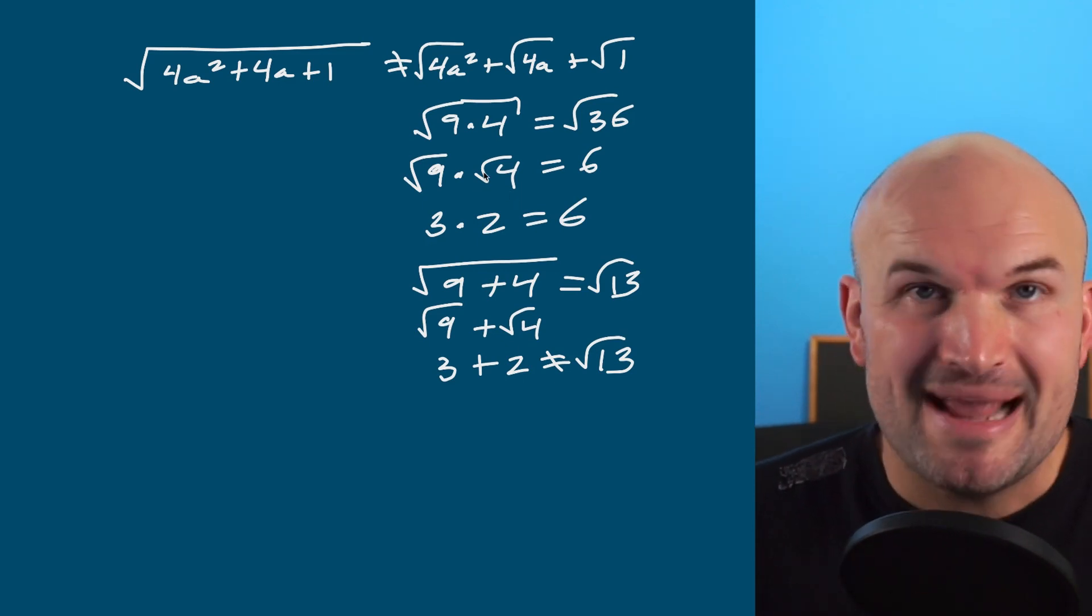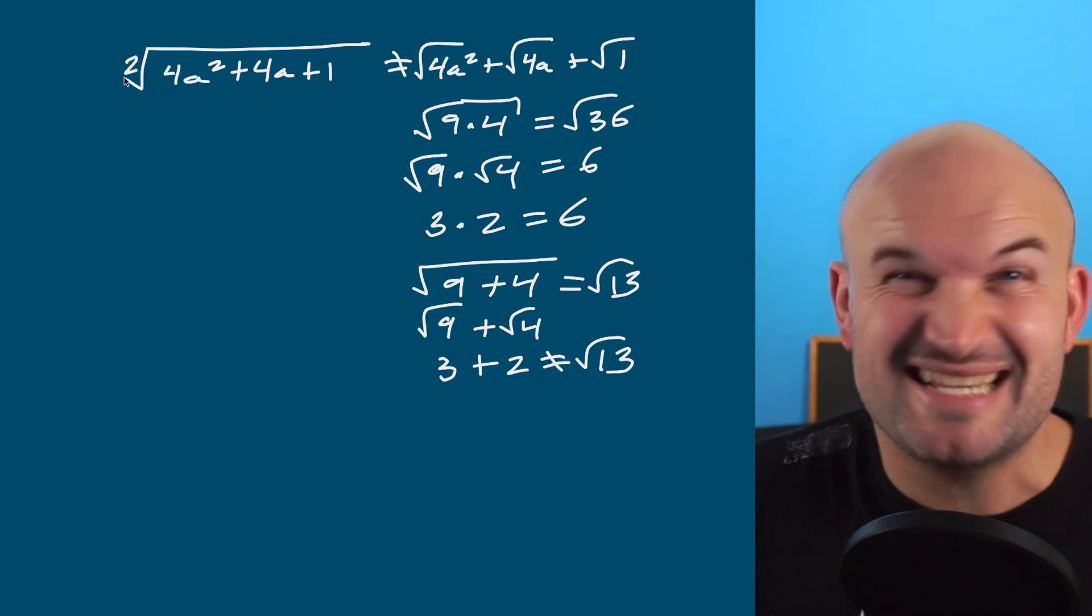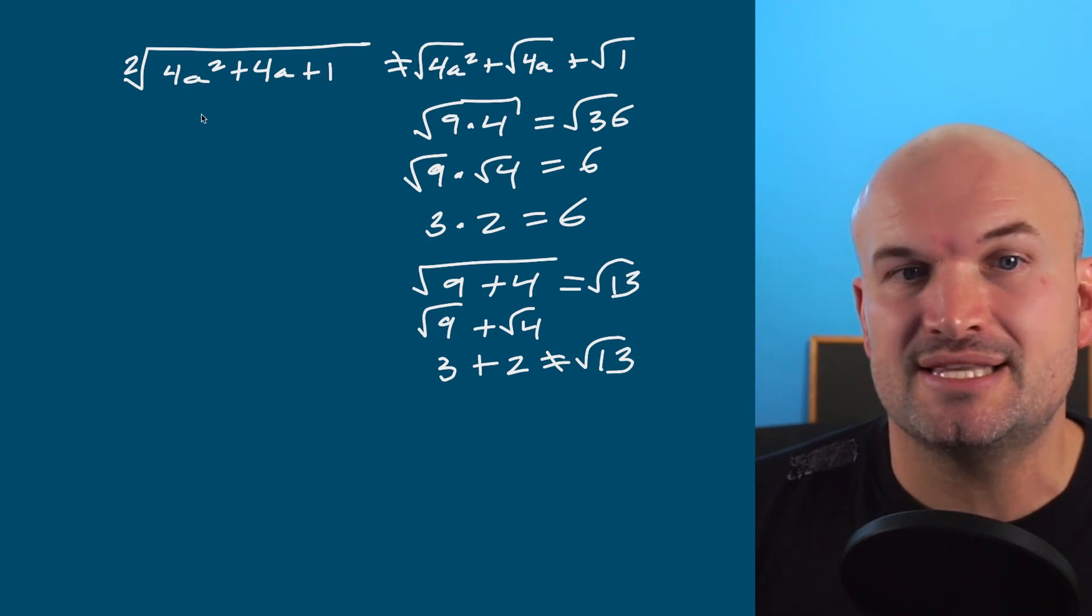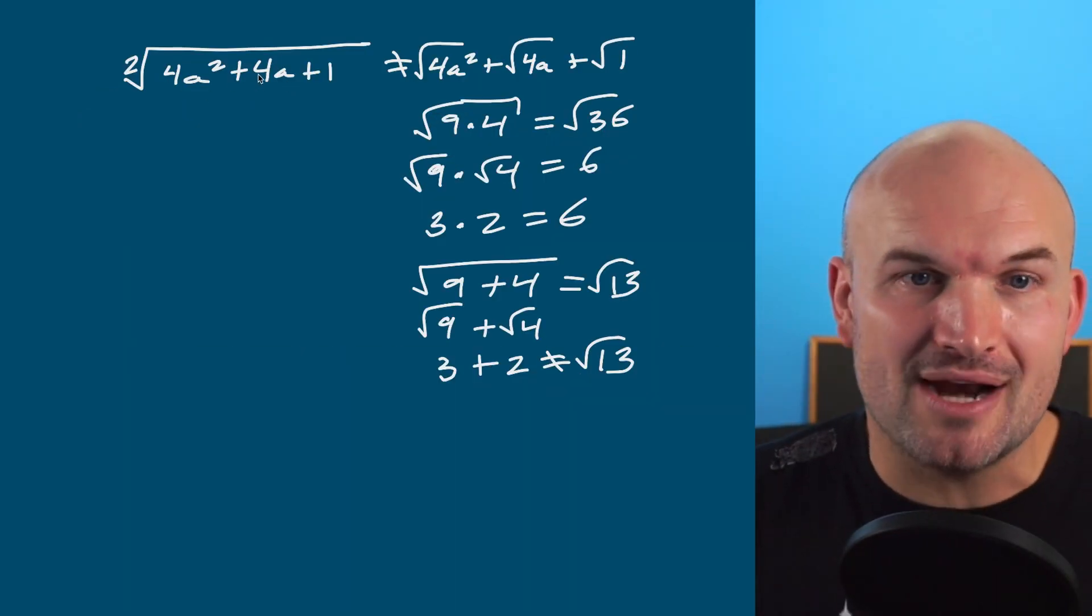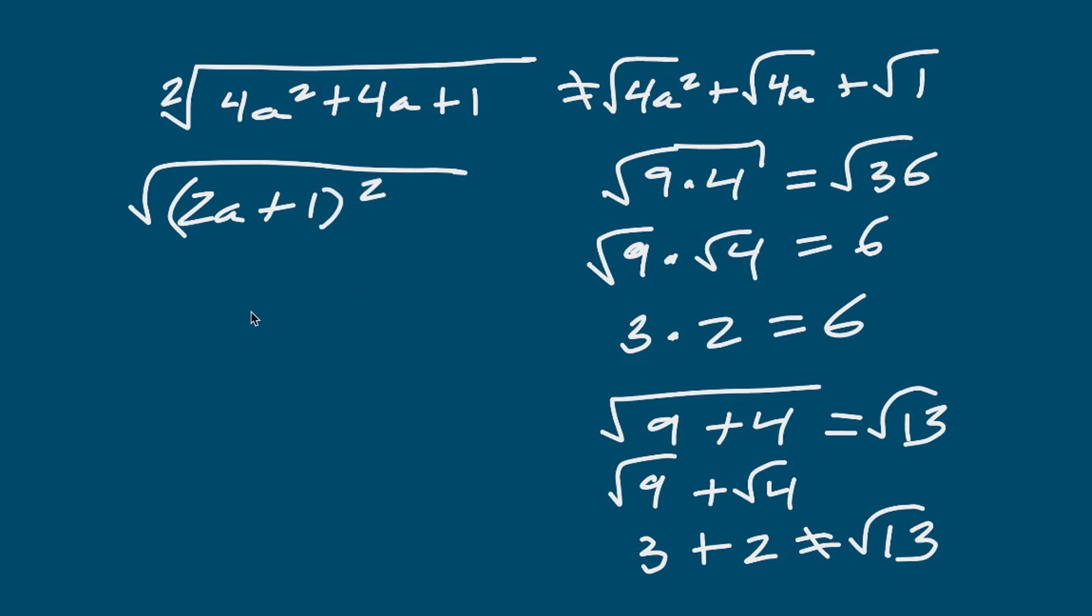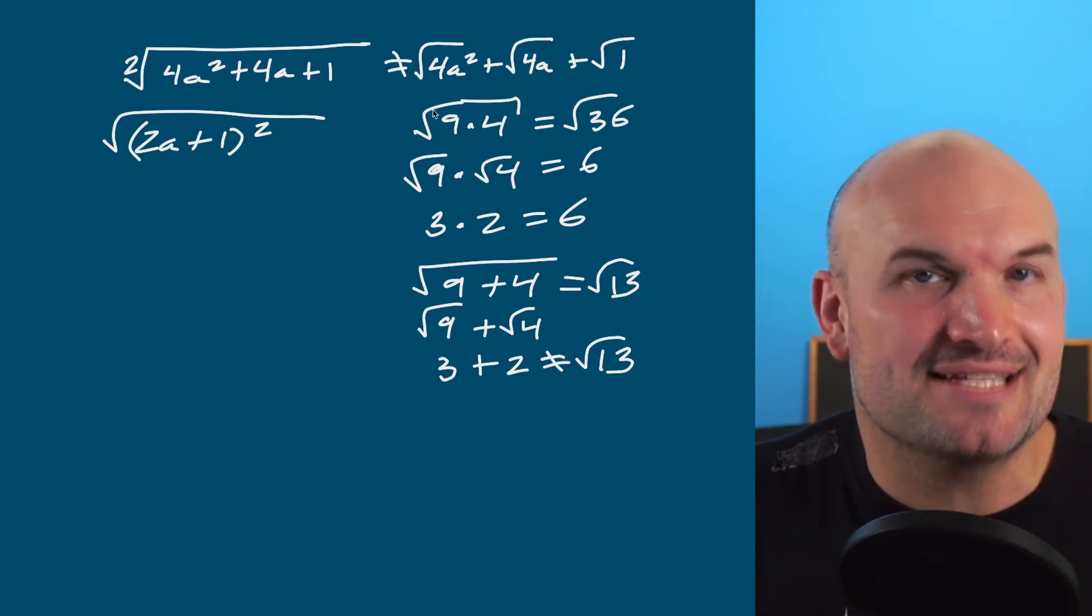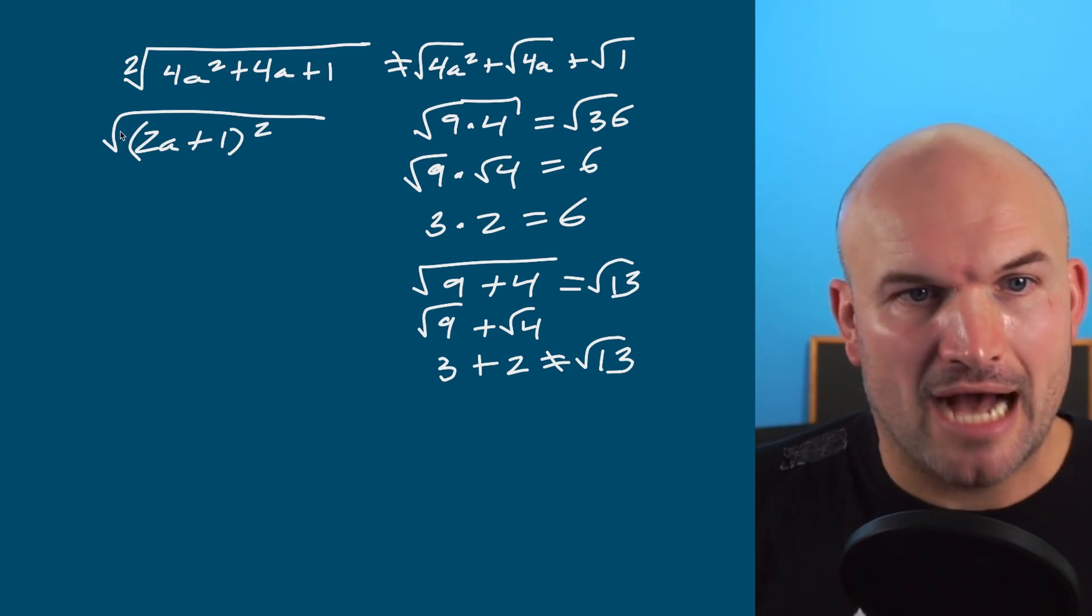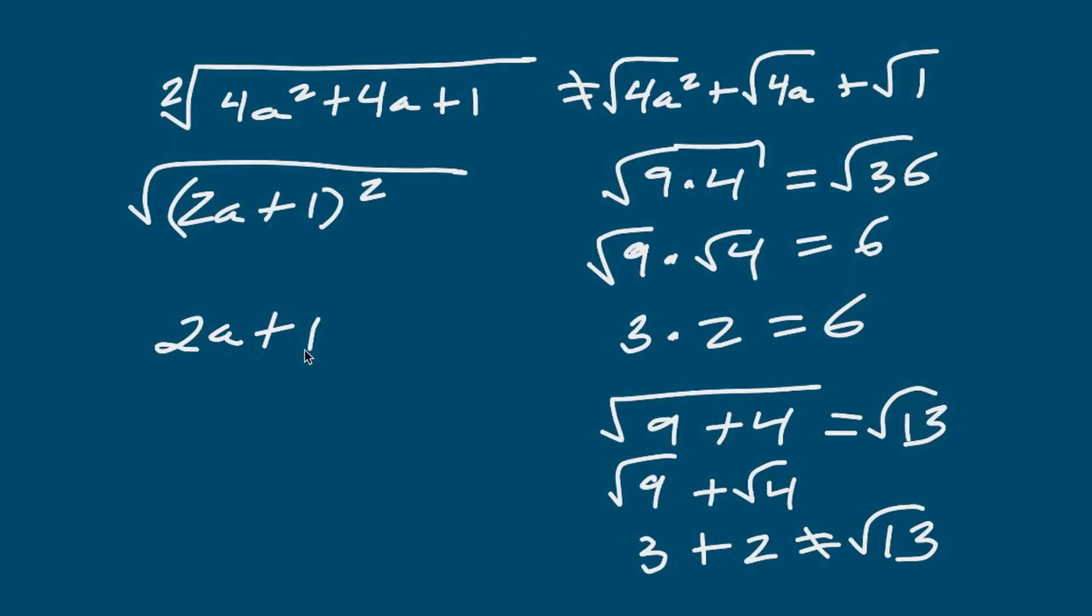Then what are we going to do for a problem like this? The main thing that we need to take away is no matter what our index is, so in this case we're taking a square root, that means I can take the square root of anything raised to the second power. Now this whole expression is not being raised to the second power. However, I do recognize this to be a perfect square trinomial. So by factoring this as a binomial squared, I have now just raised it to a power of 2. The square root of this expression raised to the second power is just going to leave me with a final answer of 2a plus 1. And there you go.